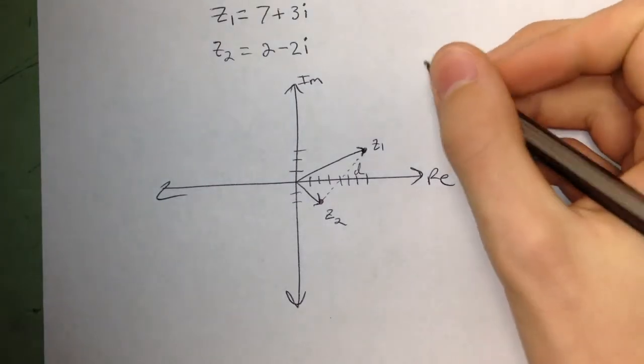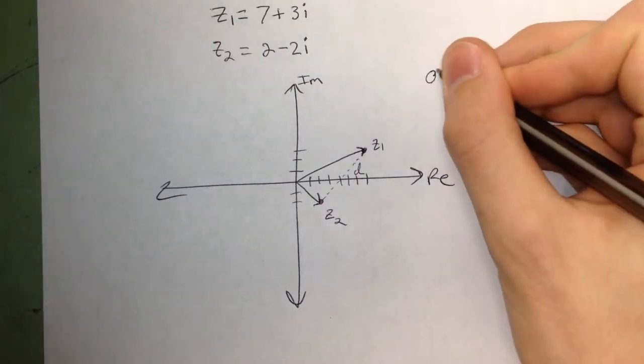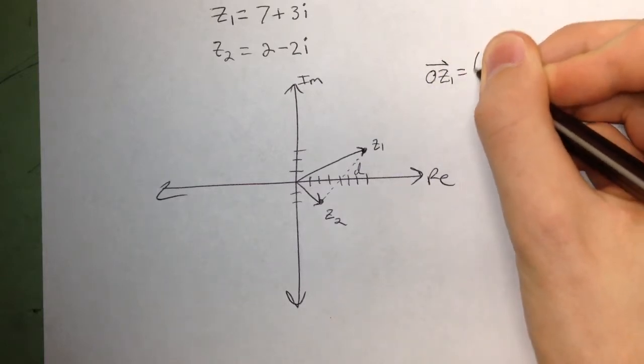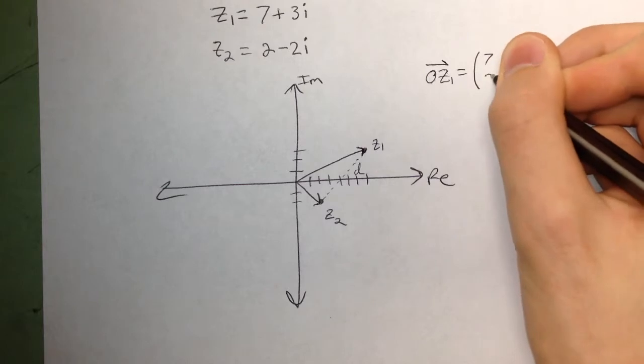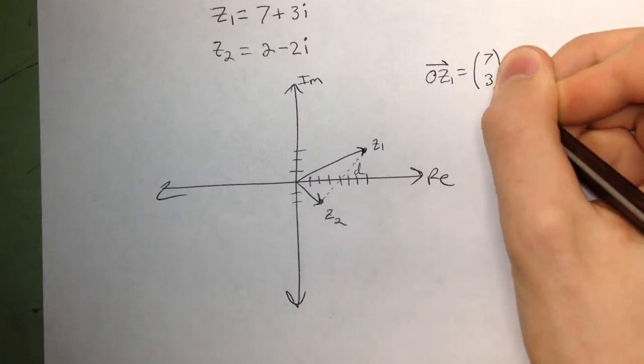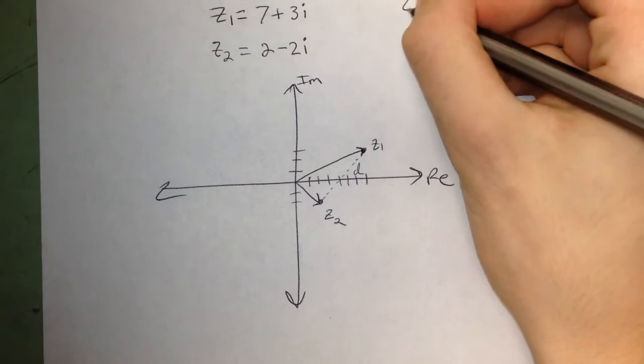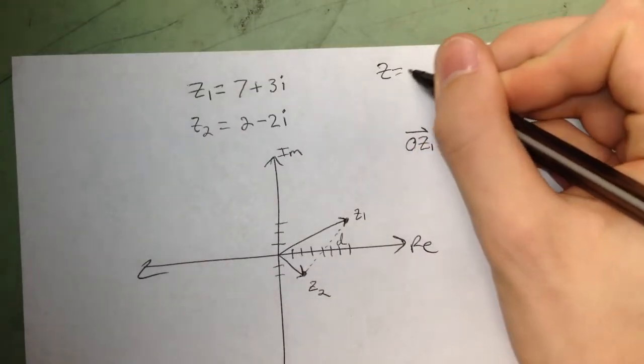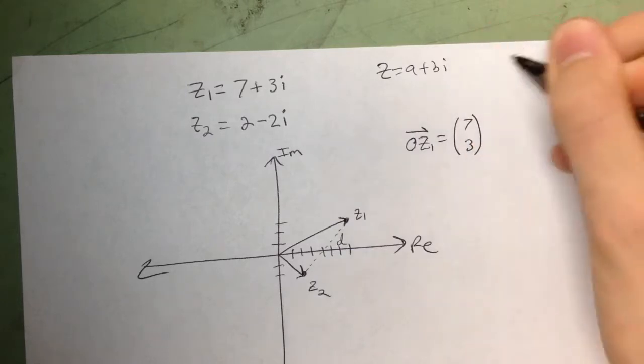So the position vector from the origin to z1 is going to be equal to (7, 3). And basically what you do whenever you have the complex number z equals a plus bi, your vector is